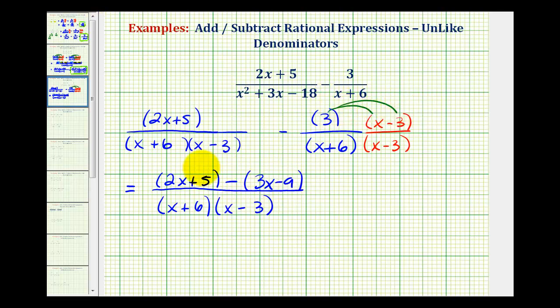Now we want to clear these parentheses so that we can combine the like terms, and because we have subtraction here, we do have to be careful. To clear the parentheses for 2x plus 5, we can just drop the parentheses or think of distributing a positive 1. But since we're subtracting the quantity 3x minus 9, we need to think of distributing a negative 1. So our denominator is going to stay the same, we have the quantity x plus 6 times the quantity x minus 3.